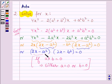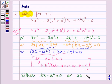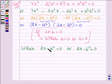From here we can say that either 2x - a² = 0 or 2x - b² = 0. To get the value of x, let us solve both these equations one by one.